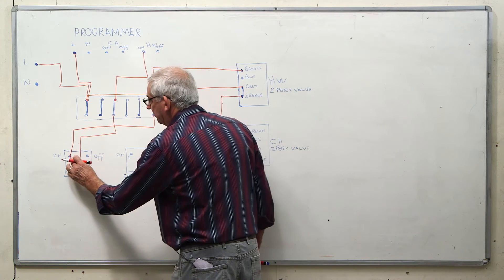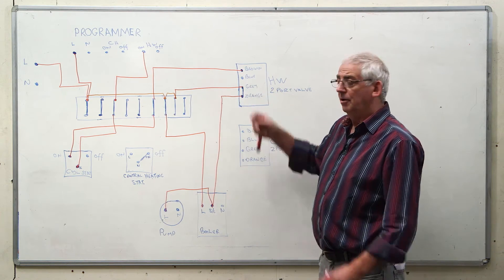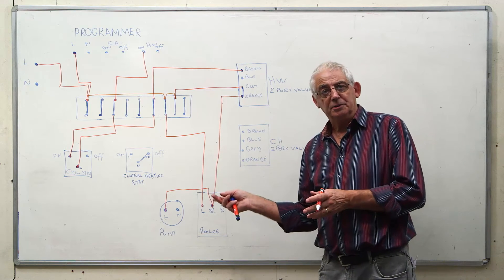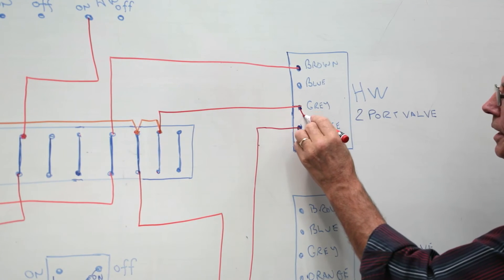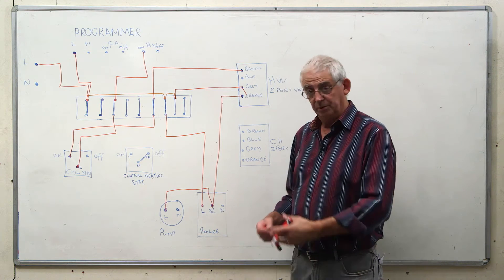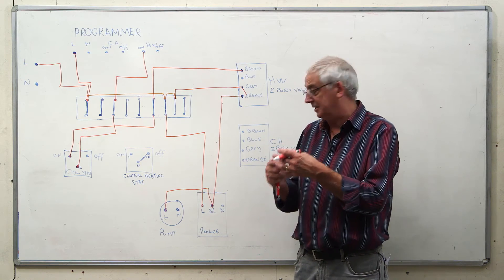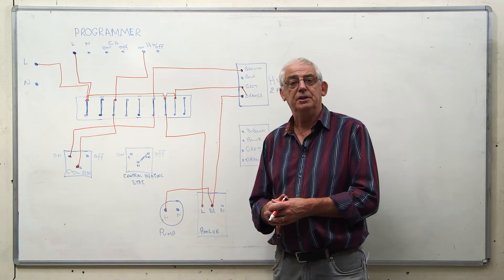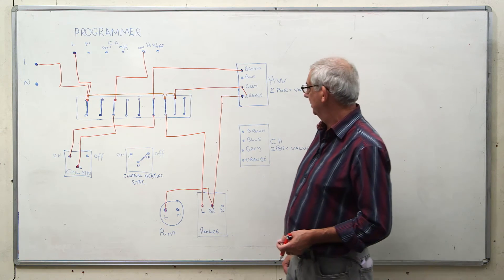Of course, if I turn this off, the valve now, because it's spring loaded, goes back to its closed position which would then open the micro switch. The signal to the boiler would stop because there's a permanent live. If it was needed to, this pump would continue but that is an electronic device within the boiler which we don't generally need to worry about.